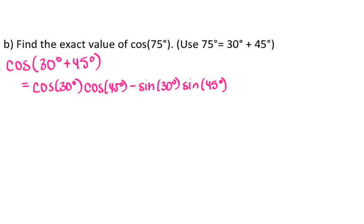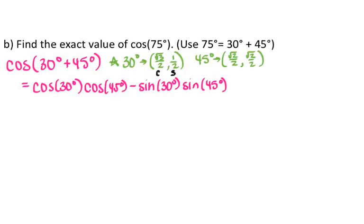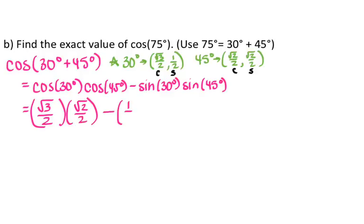So 30 degrees is my index finger, and my ordered pair for that using my hand trick is (root 3 over 2, 1/2). And then 45 degrees is my middle finger, so my ordered pair for that is (root 2 over 2, root 2 over 2). Cosine is x, sine is y. So cosine of 30 degrees is root 3 over 2, cosine of 45 degrees is root 2 over 2, minus sine of 30 degrees is 1/2, and sine of 45 degrees is root 2 over 2.